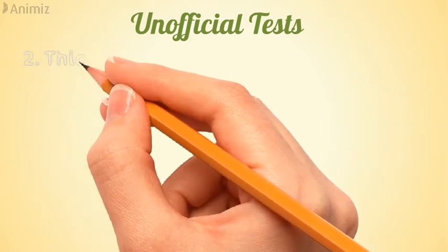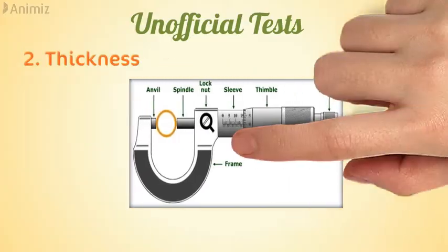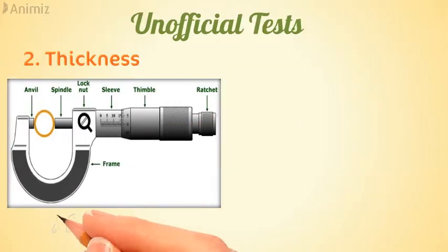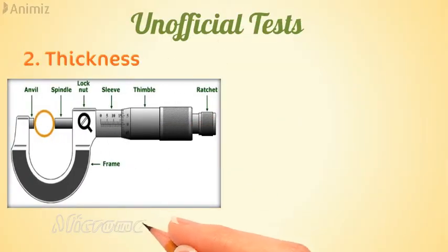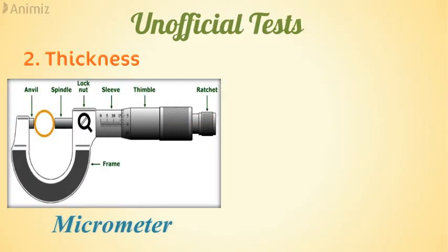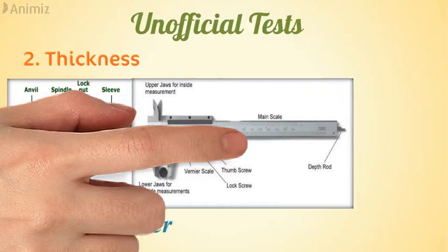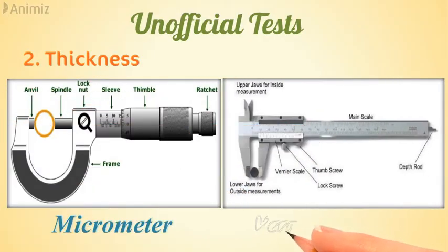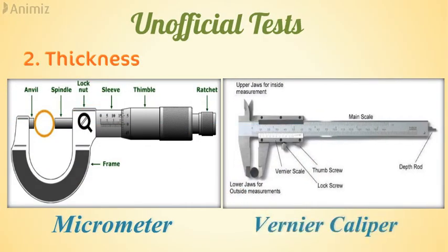The second test is the thickness of the tablet. It can be measured by a micrometer by placing the tablet diametrically between the anvil and the spindle, with thickness measured in millimeters. Alternatively, a vernier caliper can be used, where the tablet is placed diametrically between the jaws and thickness is measured in centimeters.